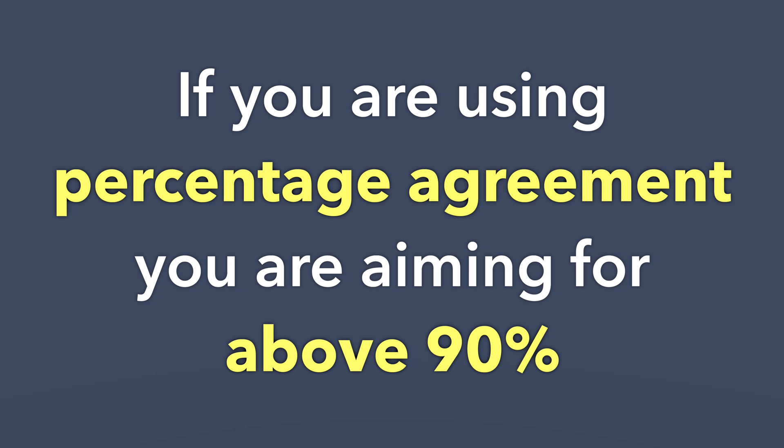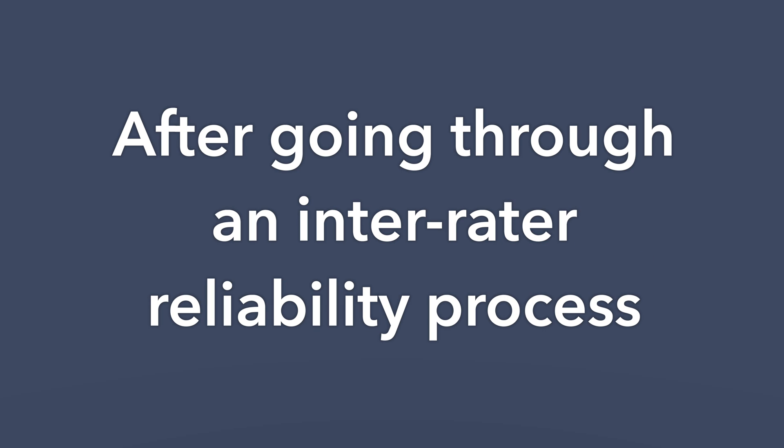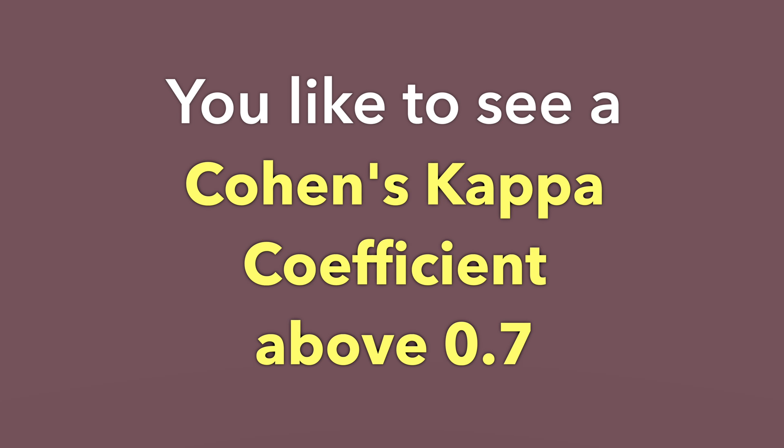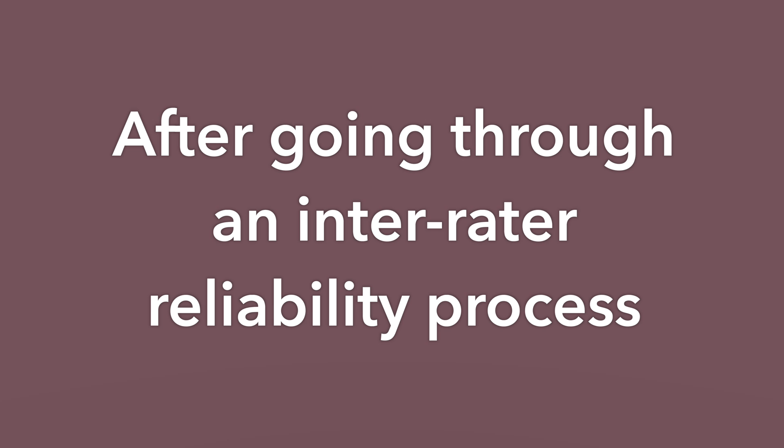I have an answer and then I have a 'but.' If you're using percentage agreement, you'd like to see above 90% after going through an inter-rater reliability process. For a kappa coefficient, you'd like to see above 0.7. But it's never sufficient in my opinion — and in the journals I publish in — to just give a number, like 'we achieved a 0.8 kappa and 95% agreement.' That's not enough information.